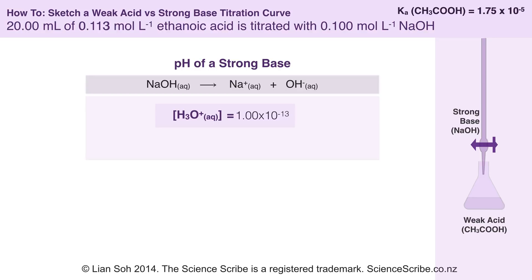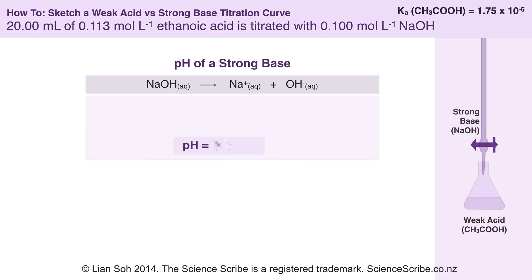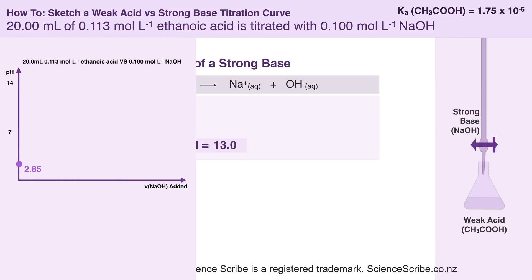Once I know the concentration of hydronium ions, I can go ahead and use the pH formula. This tells me that at the very end of the titration, my maximum possible pH is going to be 13, and I'm going to show that with a dotted line.